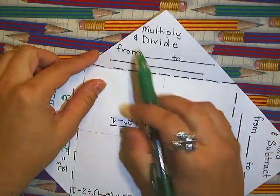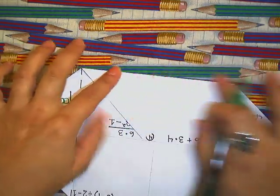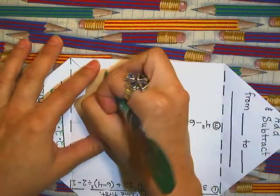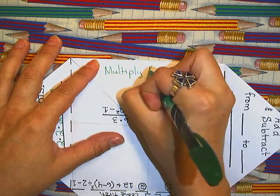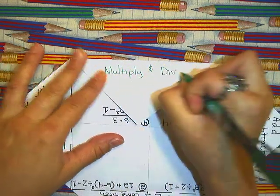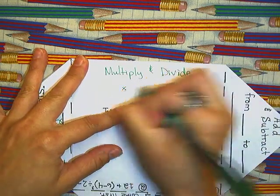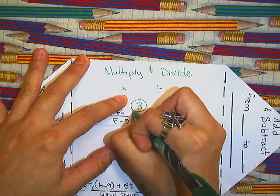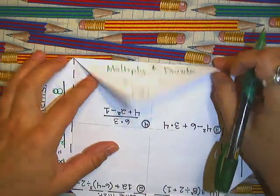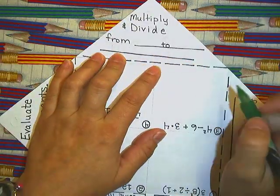After exponents comes M and D which are for multiply and divide. So we are going to fold that flap down and we will write multiply and divide. And of course we want to make a little visual. 3 and circle. This is your third step.